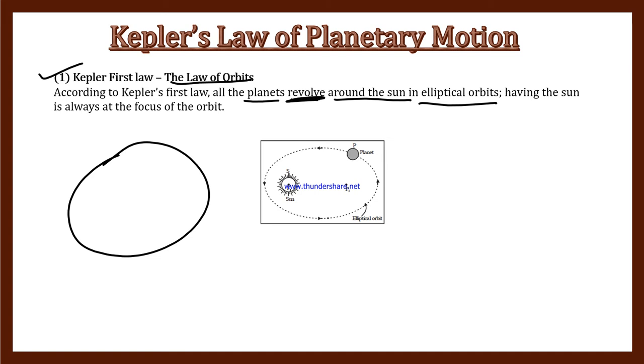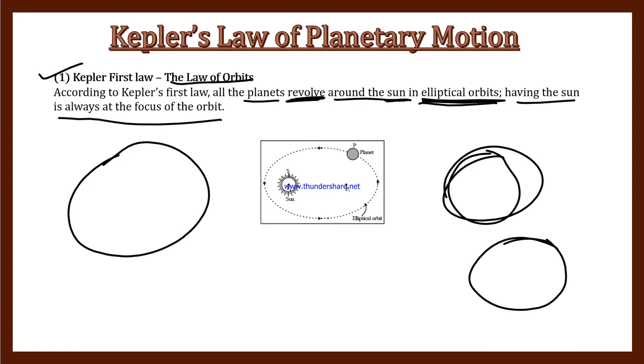They revolve in an elliptical orbit. Elliptical means not exactly circular but a slightly different shape, like the shape of an egg. The sun is always at the focus of the orbit.